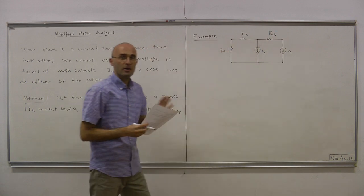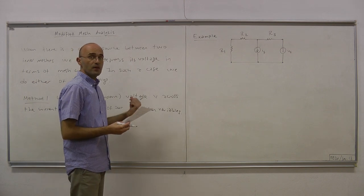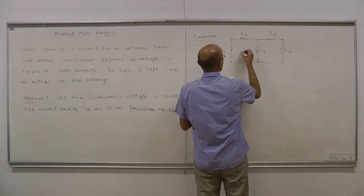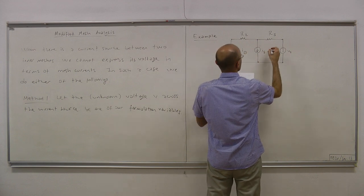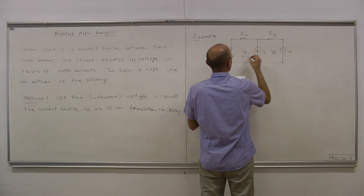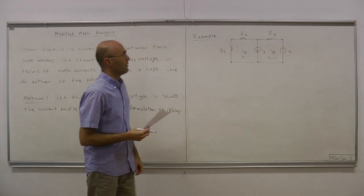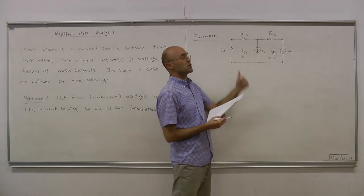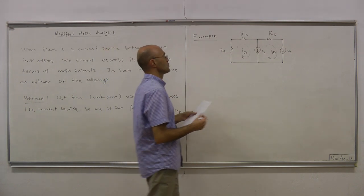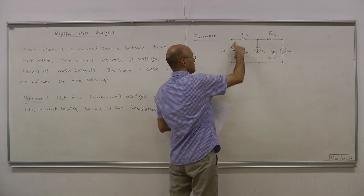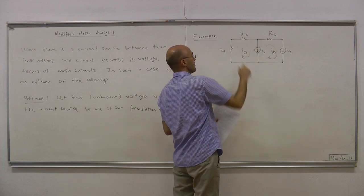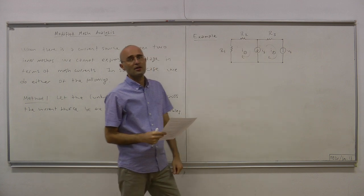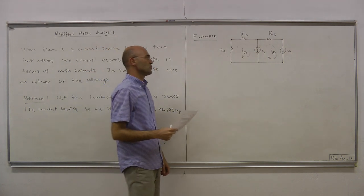Here is a very primitive circuit to demonstrate this. We have R2, R3, and two inner meshes. Let's label the mesh currents: I1 and I2. The direction is clockwise by convention. What we do is write KVL at each mesh and express the voltages in terms of mesh currents. When you try to write KVL in this mesh, this voltage can be expressed in terms of mesh current. But when you come to the current source, you cannot directly express its voltage in terms of mesh currents.